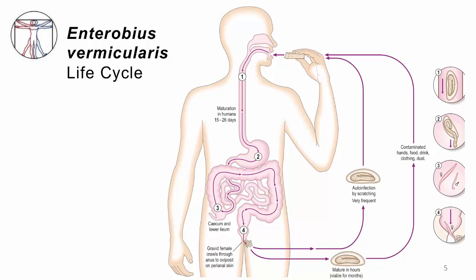Boy meets girl, they have sex — making the human the definitive host for this infection. Once mated, the fertilized female makes her way down to the rectum and, usually at nighttime, crawls out through the anus to lay eggs in a very sticky goo along the perianal skin. You can't see them, but that goo is irritating, so people scratch. It's very common to auto-infect by transferring those sticky eggs to the mouth via fingernails — for example, by sucking a thumb. Eggs can also remain viable for months, spreading through shared underwear, towels, or simply being in the same bed.